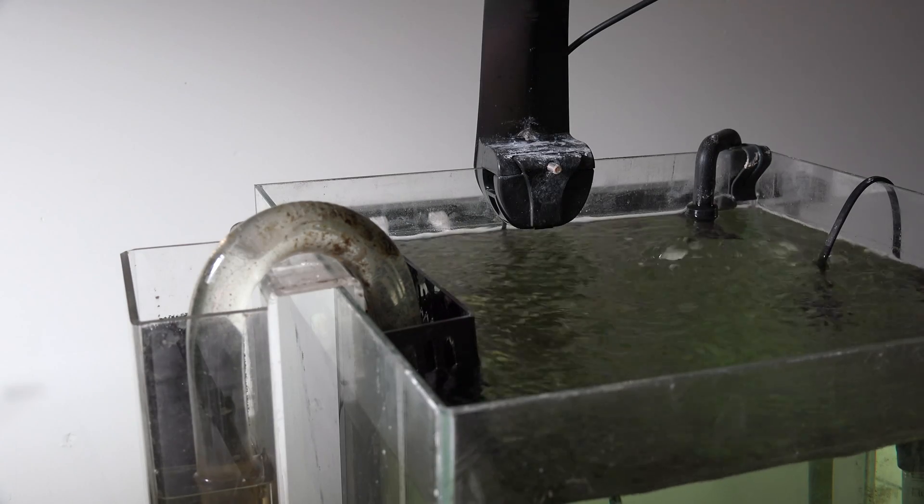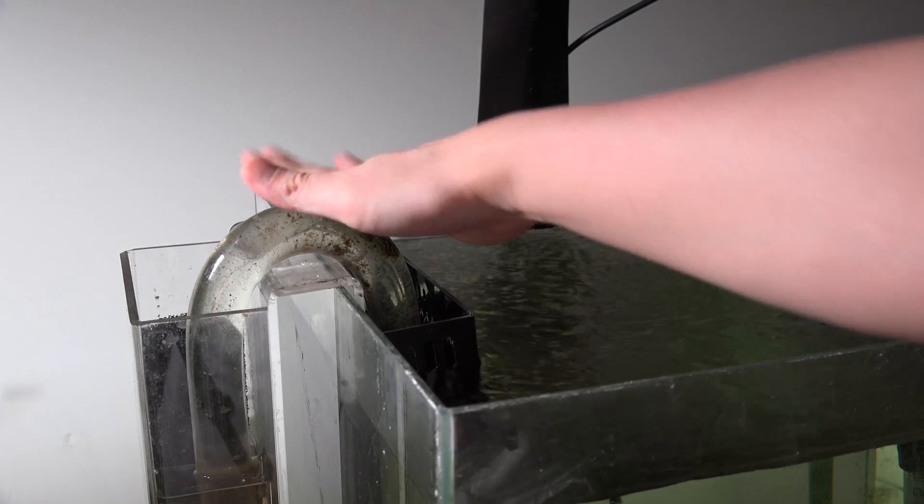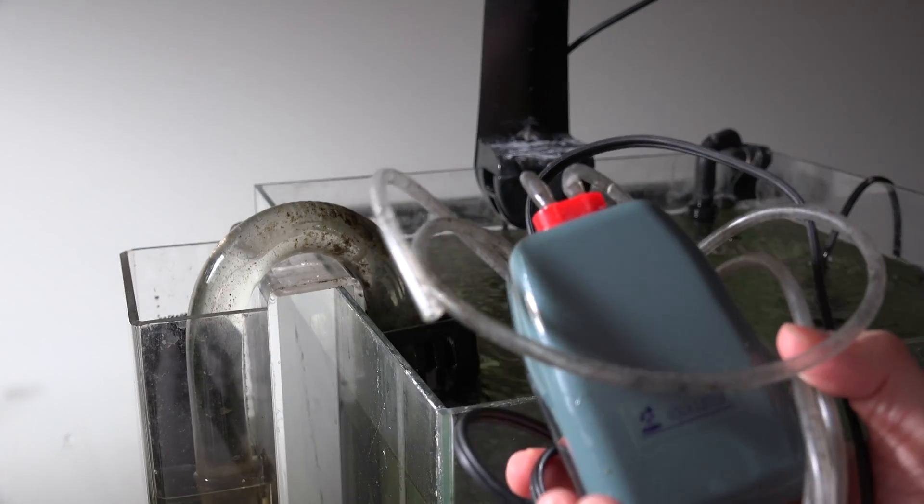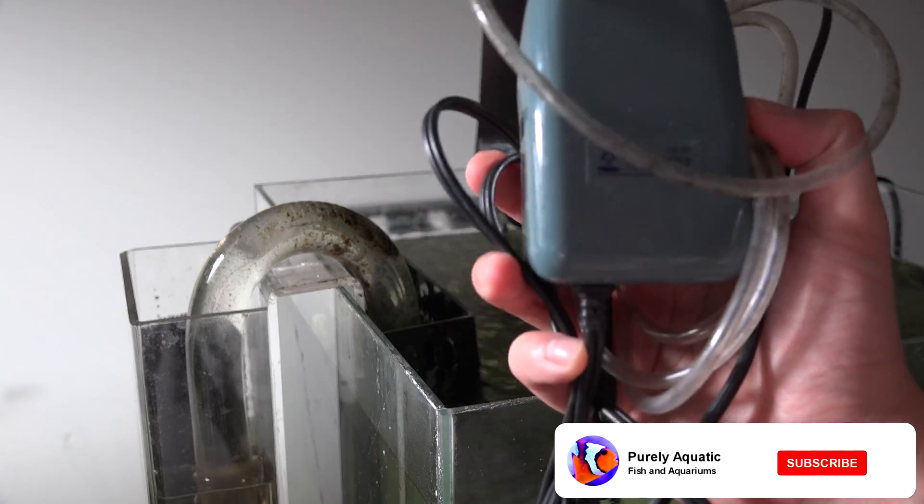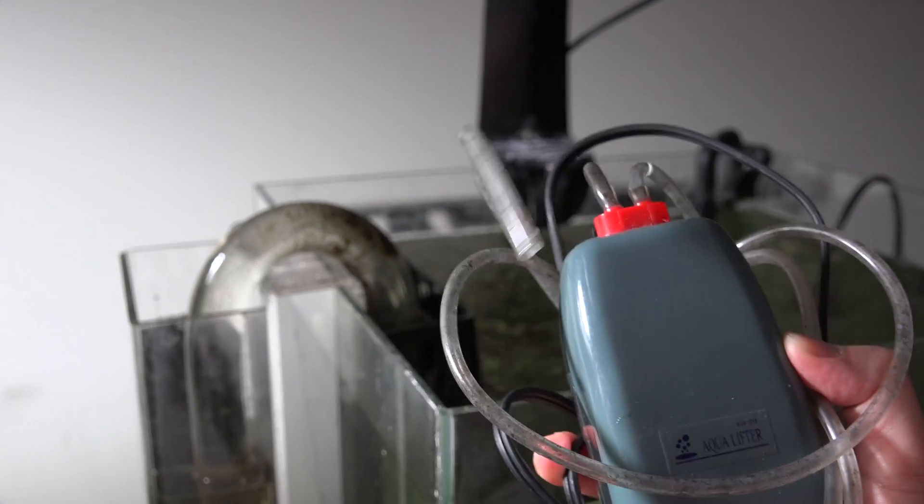Hey what's going on guys, so today I'm going to show you how to start a siphon on an overflow box without an air lifter or pump. I was actually thinking about this the other day where I only have this one Aqua Lifter and they actually discontinued making this model, so if this thing ever breaks, how am I supposed to start this siphon?